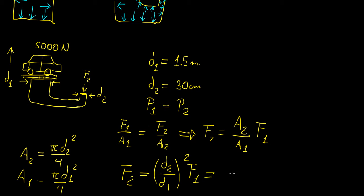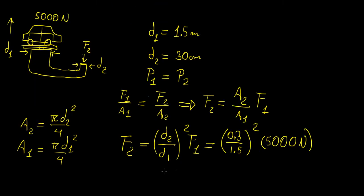And now we just plug in the values that we started with. So we have 30 centimeters, which is 0.3 meters here, then 1.5 meters at the bottom, all of that squared, and the weight of the car, the force exerted by the car, is 5,000 newtons. So let's just plug that in our calculator, and let's see what we get from that. And this is going to be 200 newtons.